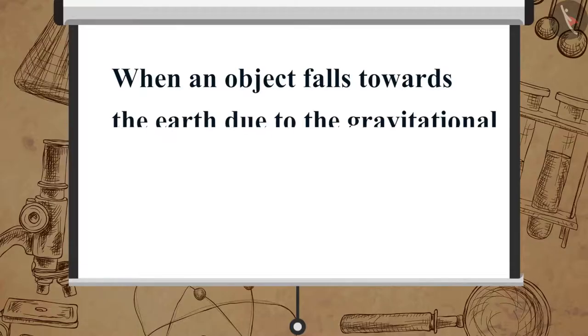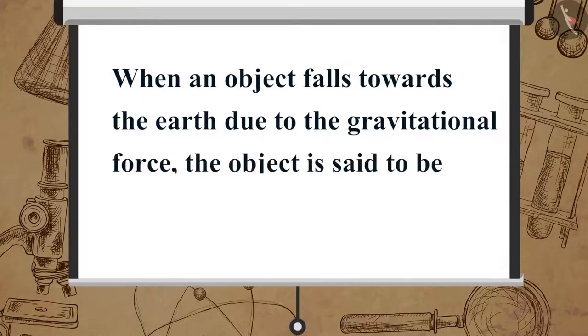Here, the Earth's gravitational force is attracting the ball, and so it moves downwards. So, when an object falls towards the Earth due to the gravitational force, the object is said to be in free fall.